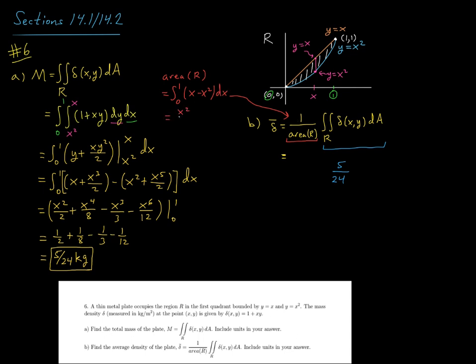So that'd be x squared over 2 minus x to the 3rd over 3 from 0 to 1. And that's going to give us a half minus a third, which is equal to 1 6th. So that's the area portion of it.